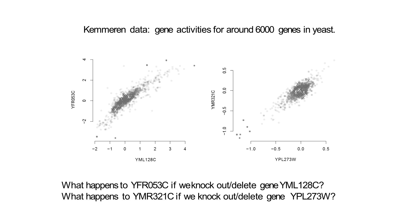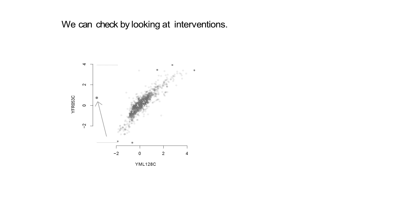The nice thing about the dataset is that there are actual experiments done. For the example I showed first, you can find an intervention where exactly YML got knocked out — marked here with an arrow. You can check what happened to the mRNA concentration of YFR when you knock out gene YML. In this case, you changed the activity of YML to really low values, but the activity of YFR hasn't changed at all — still somewhere in the middle.